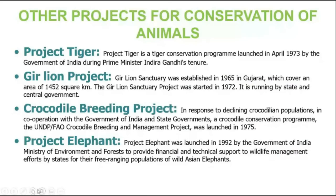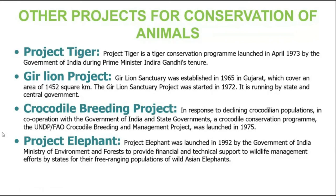There are some projects meant for conservation of particular animals. The Tiger Project was launched in 1973 by Indira Gandhi. A project was established in 1965 in Gujarat. A project was done in 1972, Crocodile Breeding Project in 1975, and Elephant Project in 1992. All these projects were meant for the conservation of particular species that are more vulnerable to stress and poaching — like lion, tiger, crocodile for their skin, and elephants for their products.